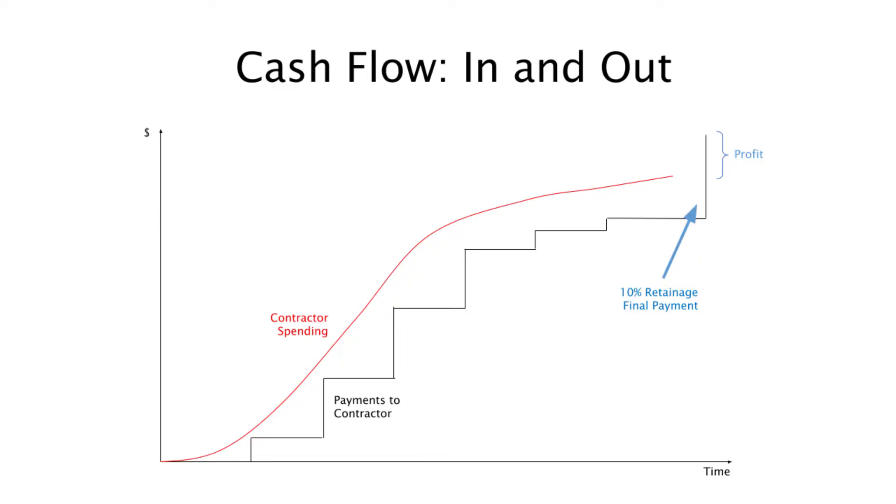So that lag is problem number one for the contractor. Problem number two: in most contracts, the owner does not pay the contractor the full amount requested. He or she deducts 10%, and that's retainage. They also call it retention in some parts of the world. It's kind of leverage that the owner wants to keep on the contractor to make sure that the project is completed according to the terms of the contract. As we see here towards the end, the contractor is in negative cash flow the entire life cycle of the project until the last payment comes in. The last payment is probably the biggest payment—it includes not only the last progress payment but also the retainage of the contract.